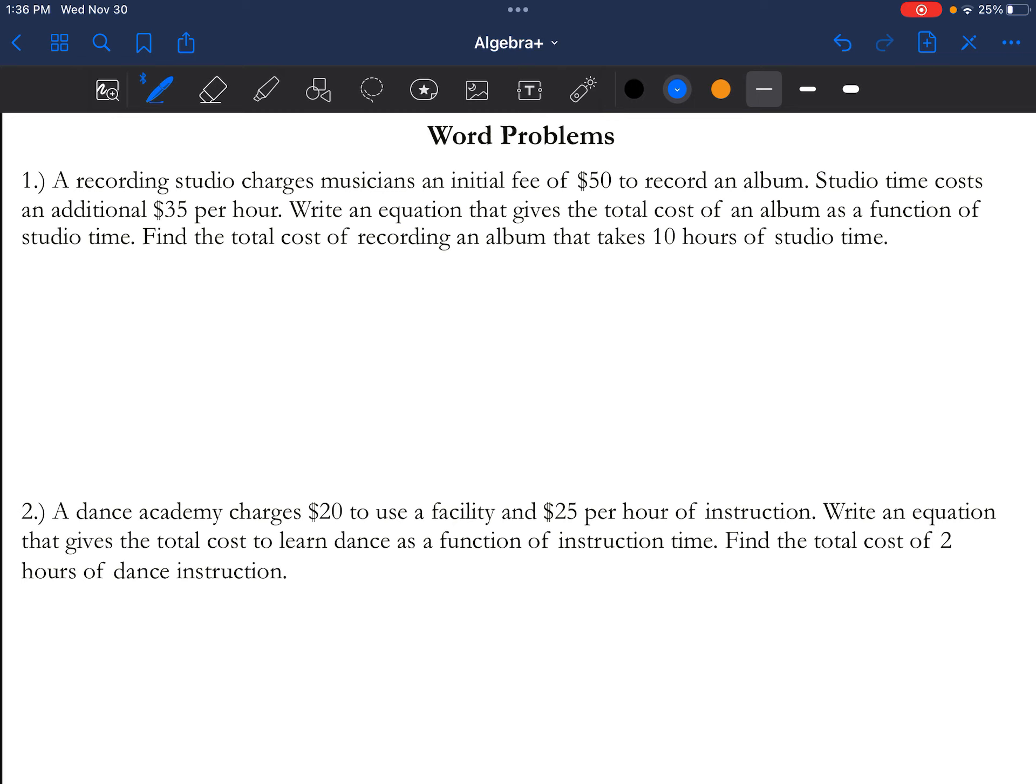So it says a recording studio charges a musician an initial fee of $50. Initial fee, that's usually that extra part, kind of like your y-intercept. So you know it's going to be plus 50. Then it says studio time costs $35 per hour. That 'per' kind of gives you a slope. For every hour you use, you're going to spend $35, so 35x.